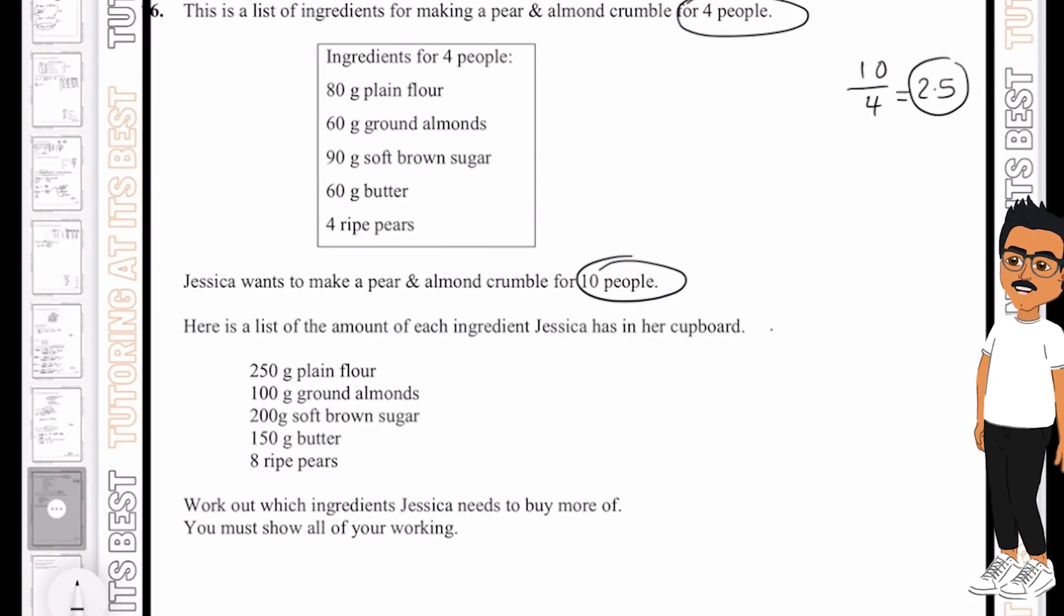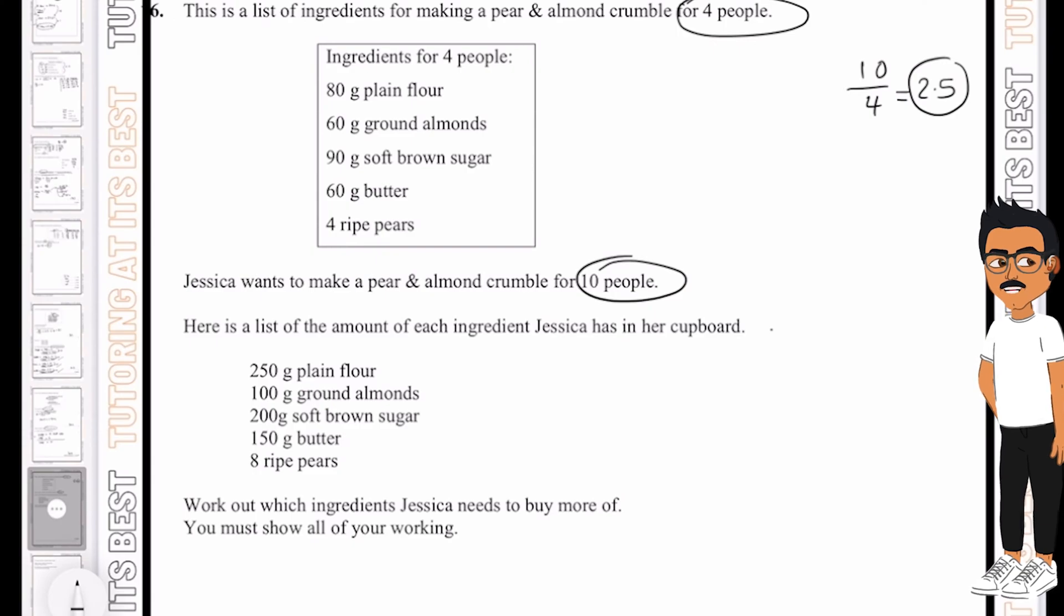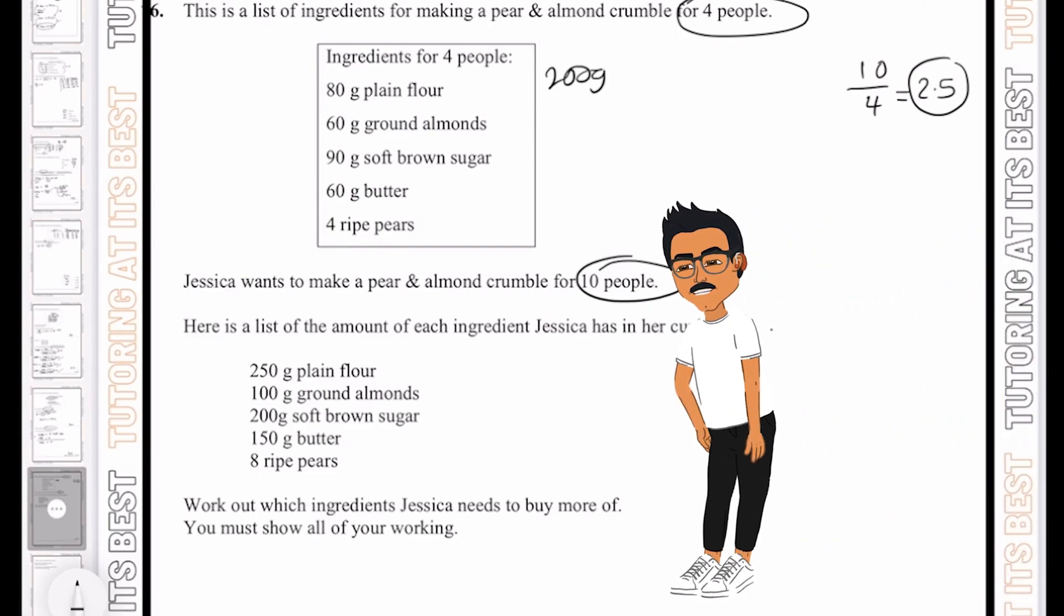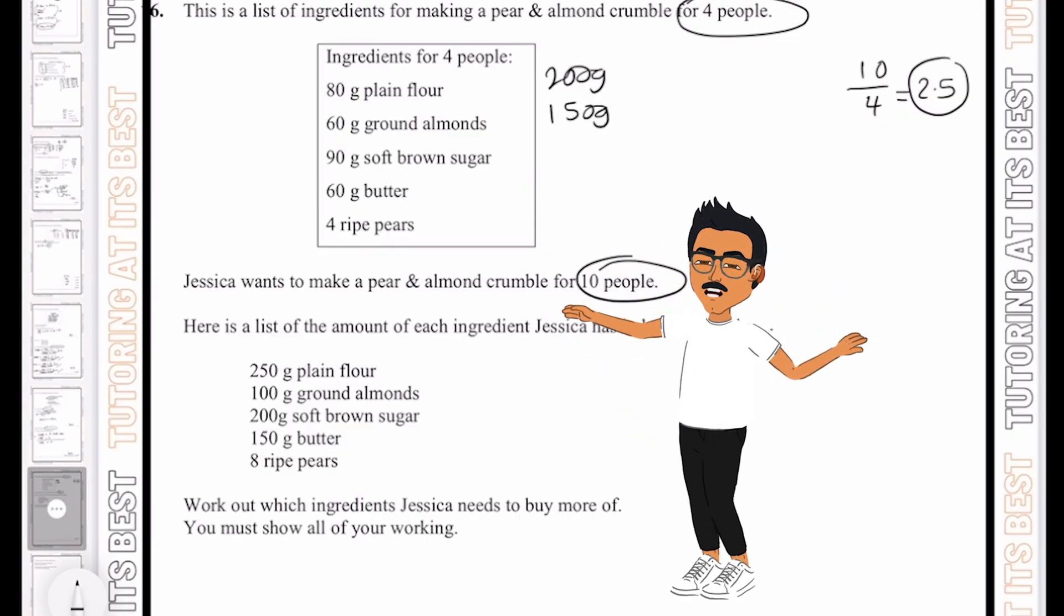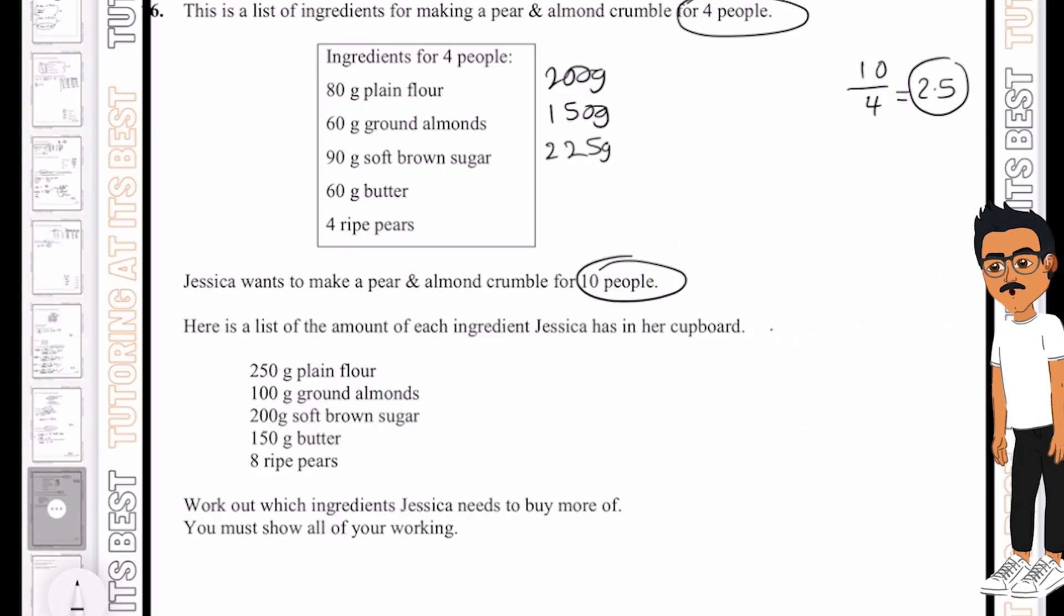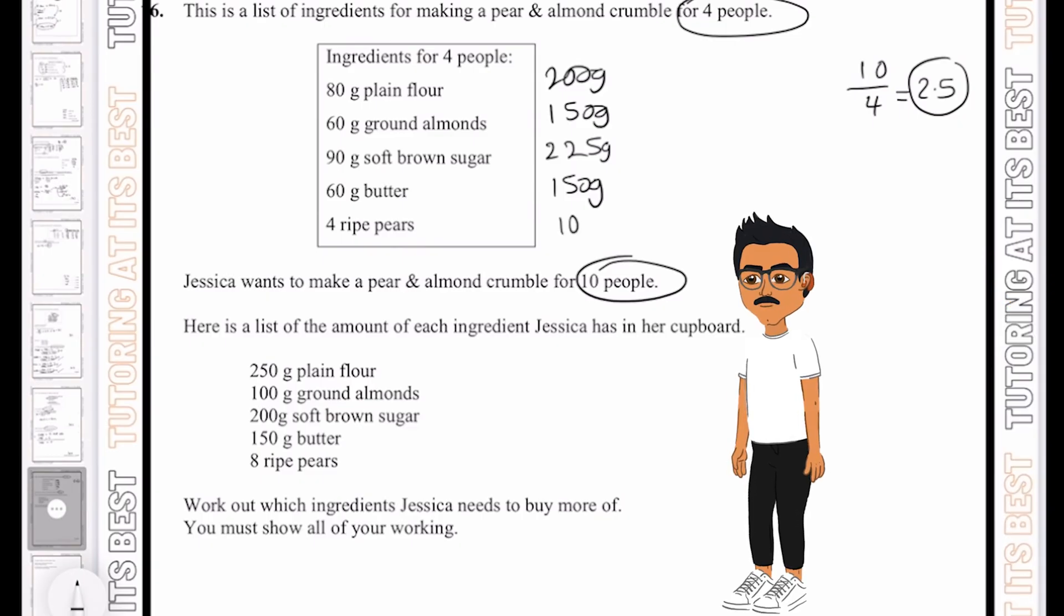So for every ingredient I have, I'm going to multiply this by 2.5. So let's take 80, we multiply it by 2.5, and that gives me 200 grams. And then for almonds, I'll do the same thing, and that would give me 150 grams. And then 90 times 2.5 is 225 grams. And then once again, we have 150 grams. And then 4 times 2.5 is 10.